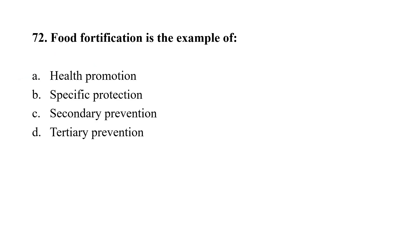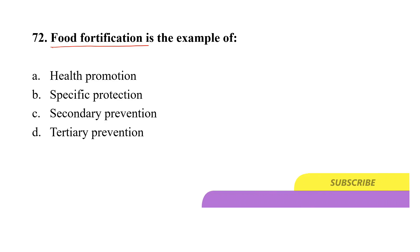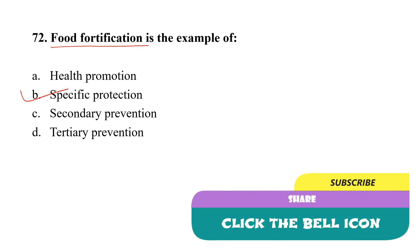Question number 72. Food fortification is the example of: Option A, Health Promotion; Option B, Specific Protection; Option C, Secondary Prevention; Option D, Tertiary Prevention. The correct option is B, Specific Protection. Food fortification is done for specific protection.